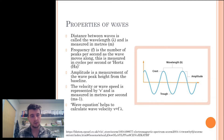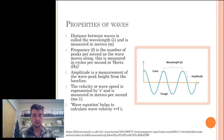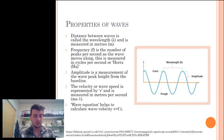One hertz is one cycle per second. The amplitude is a measure of the wave peak height from the baseline — it is basically the measure of the power of the wave. When you turn up the volume of your music, the amplitude of the wave increases. These measurements are related through the wave equation, which calculates the velocity: v equals f times λ. The velocity, or wave speed, is represented by v and is measured in meters per second.